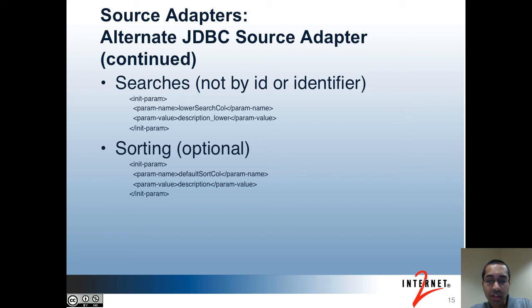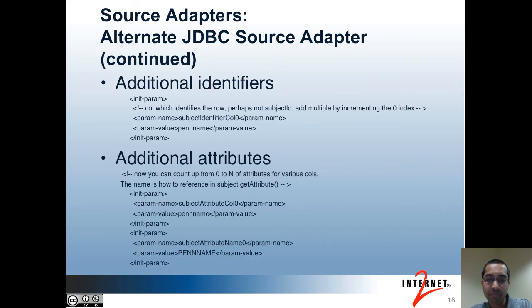The next option you can specify is for sorting, and this is optional. Next, you can specify additional identifiers. The param name would have the value as shown with an incrementing index for each identifier. The param value would be the column name. You can specify additional attributes that become part of the subject object — again, incrementing indexes are used. The first part is to specify the column name. The second part is to specify how the attribute is named when retrieved from the subject object.